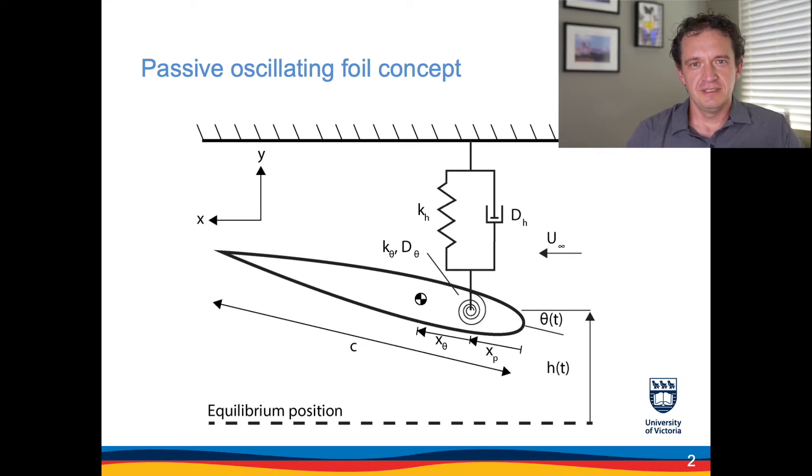I'm going to talk about the passively oscillating foil used for energy harvesting. The passively oscillating foil concept involves a NACA foil that can undergo a combination of heaving and pitching motion. In our previous studies we considered that all the parameters involving the stiffness and damping on both degrees of freedom, as well as the distance between the pitching axis and the center of mass of the foil.